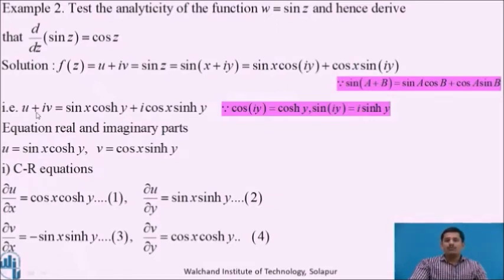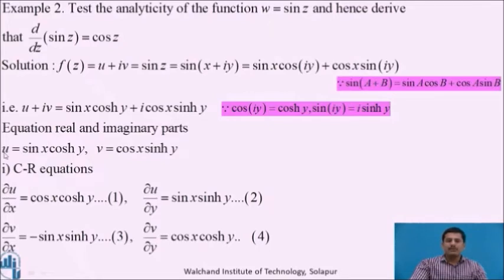Both sides are complex functions, so equating real and imaginary parts, we get u = sin x · cosh y and v = cos x · sinh y.